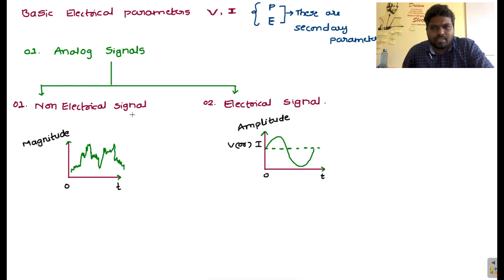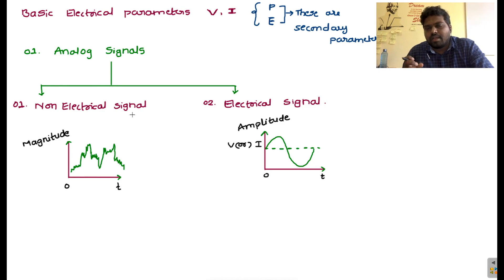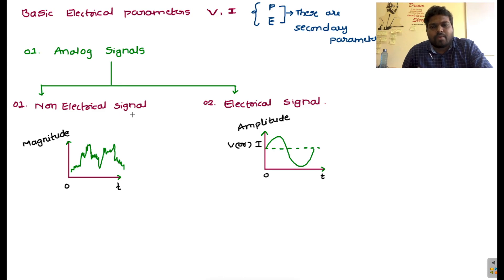To convert a non-electrical signal to an electrical signal, we use two devices: one is a sensor and another one is a transducer. Converting one form to another form requires a transducer — whether from non-electrical to electrical format or mechanical to electrical format. The sensor selects a specified range. For example, to measure temperature over a whole day at a particular location, you measure at regular intervals — every second, every hour, every two hours — and take the average temperature for that duration.